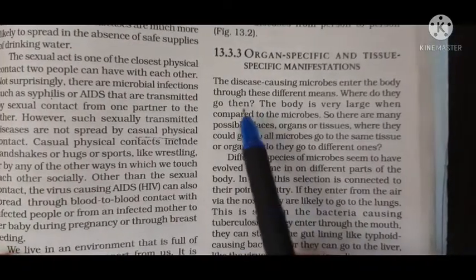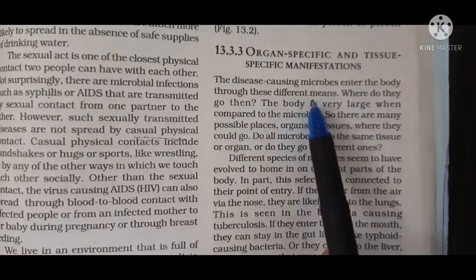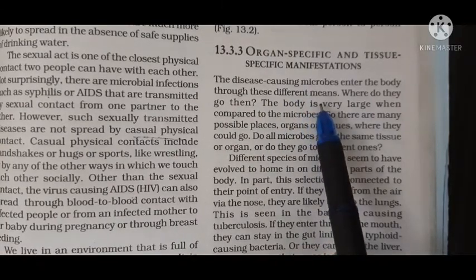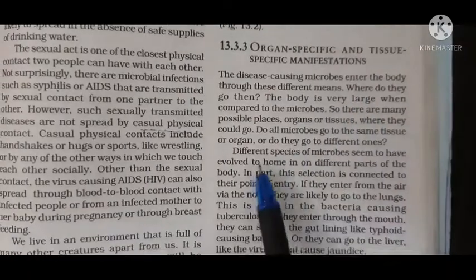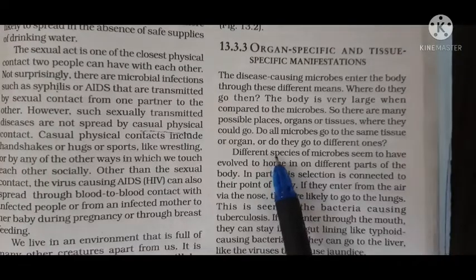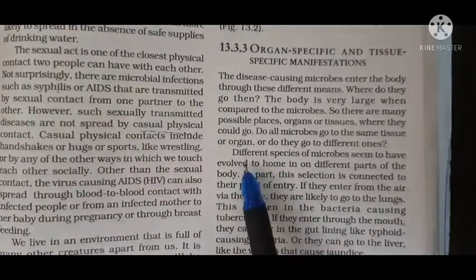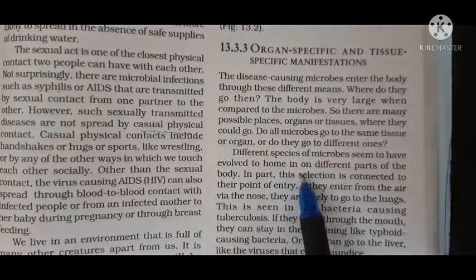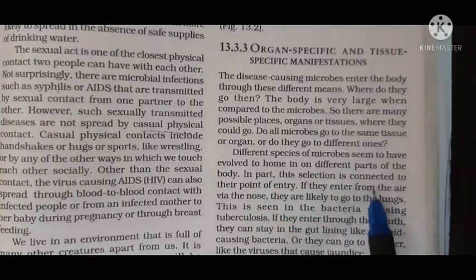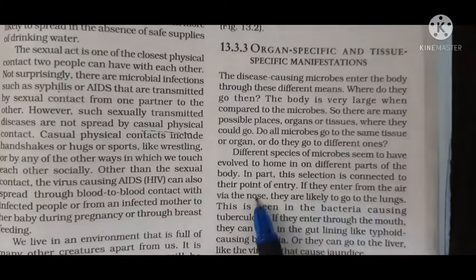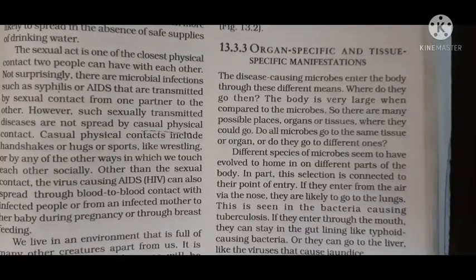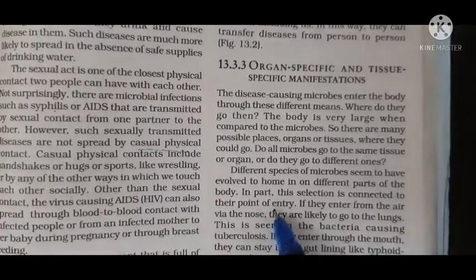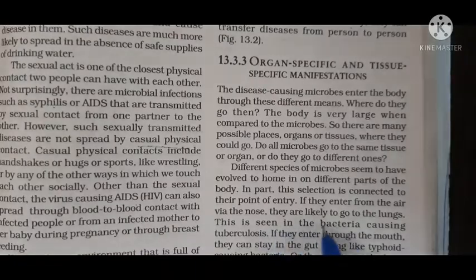Now, organ-specific and tissue-specific manifestations. Disease-causing microbes enter the body through different parts - some through the nose, some through the mouth. Different species of microbes seem to have evolved to home in on different parts of the body. This selection is connected to the point of entry. If they enter through the nose, they will likely go into the lungs, following the path: nose to pharynx, pharynx to trachea, bronchi, and ultimately to the lungs.